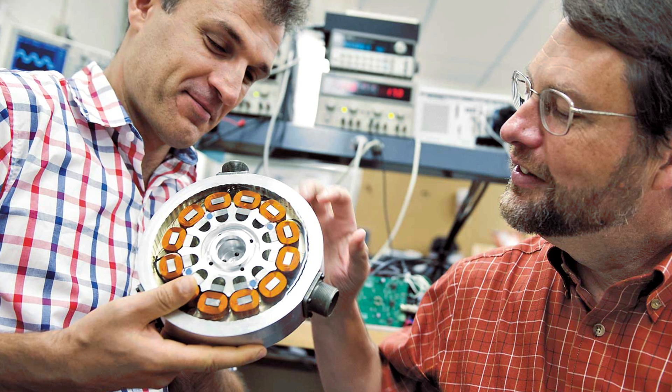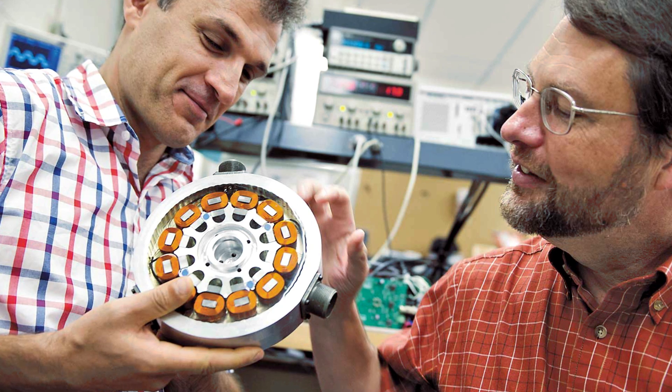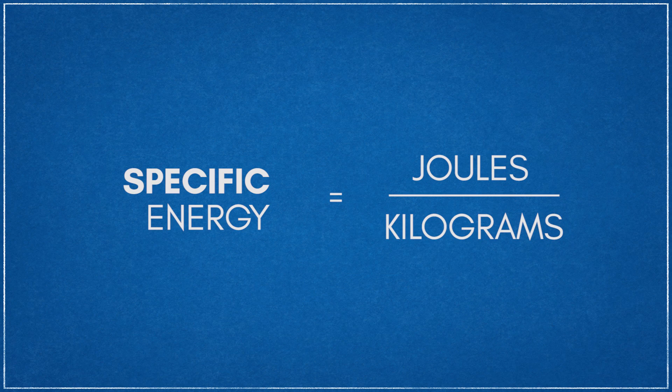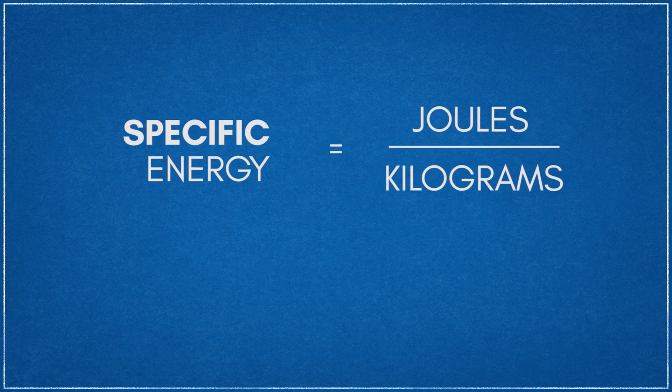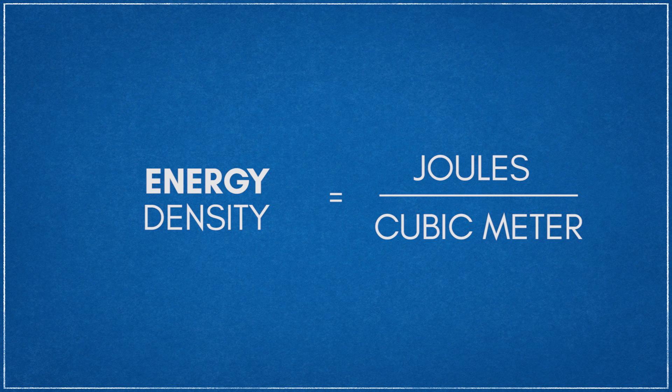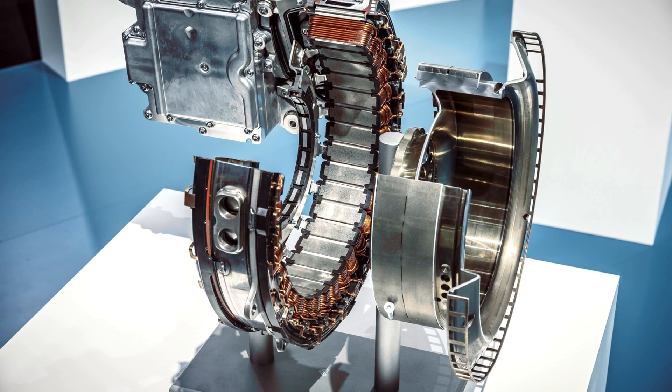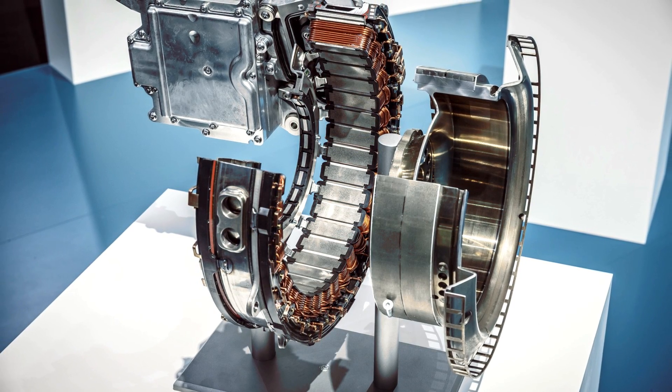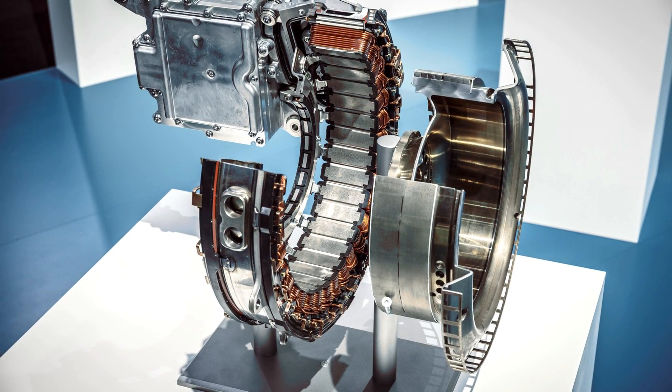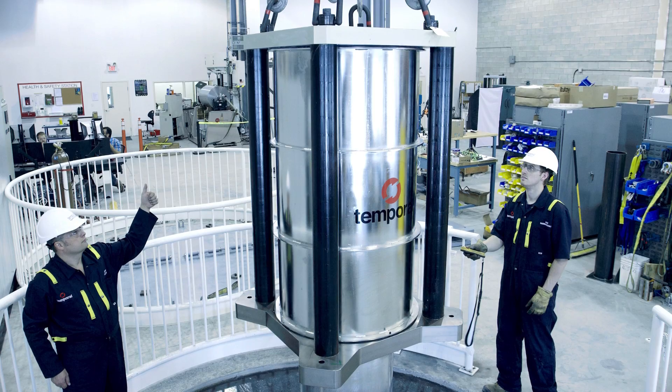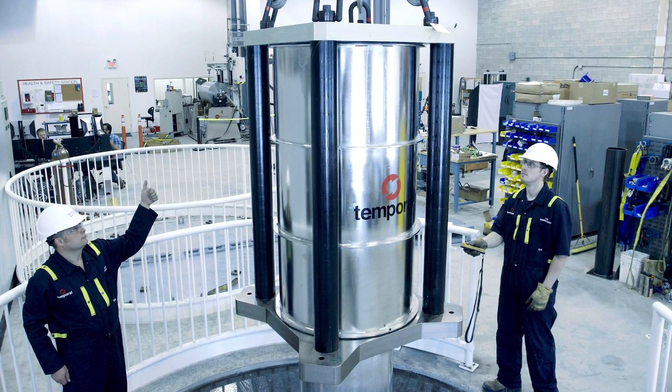In practice, choosing a flywheel's shape and material is determined by its application, requiring a balancing act between the specific energy or energy per mass and energy density or energy per volume of the flywheel. Automotive applications, for example, might favor energy density as a goal due to packaging requirements, while grid storage systems may focus more on the specific energy.